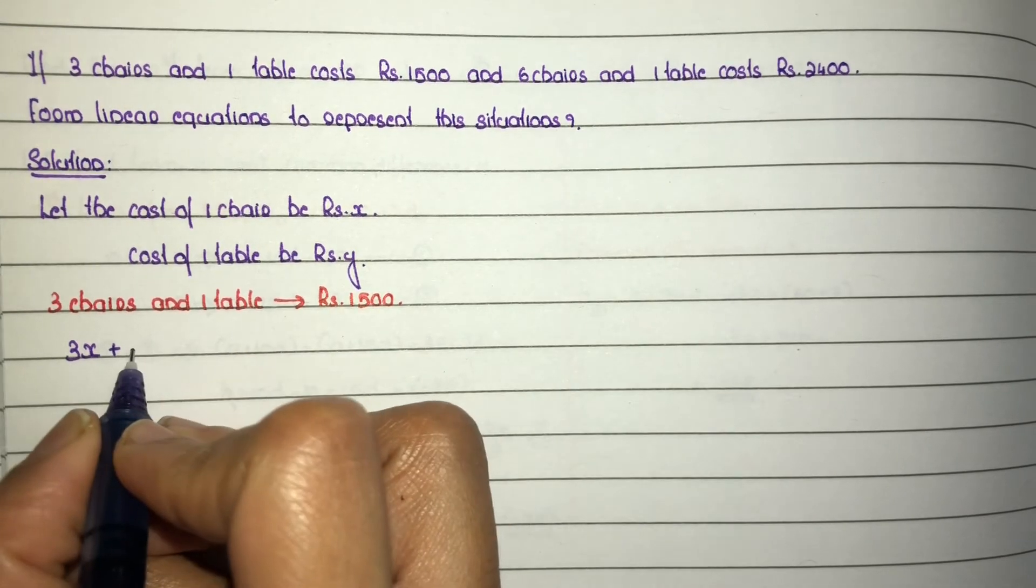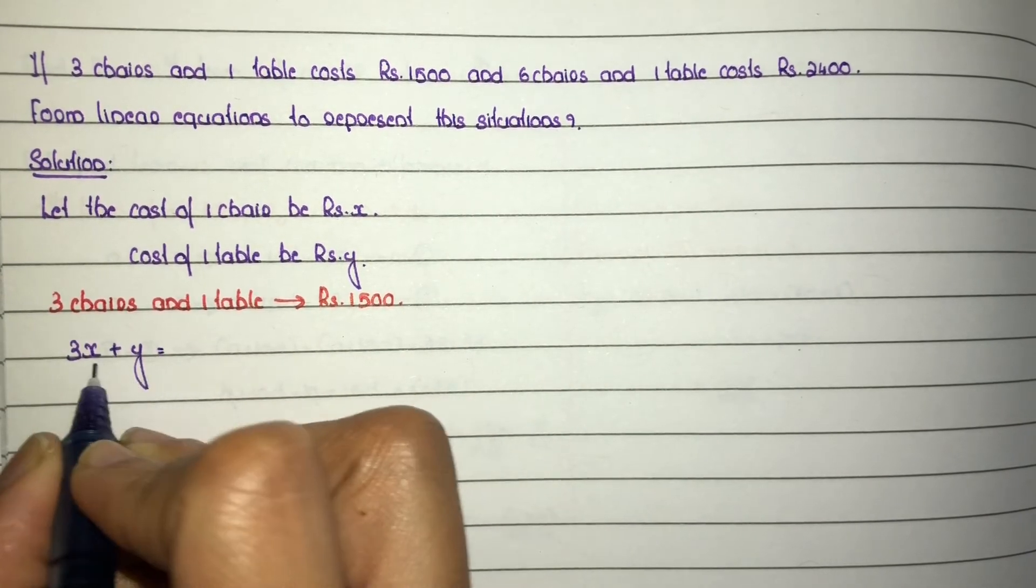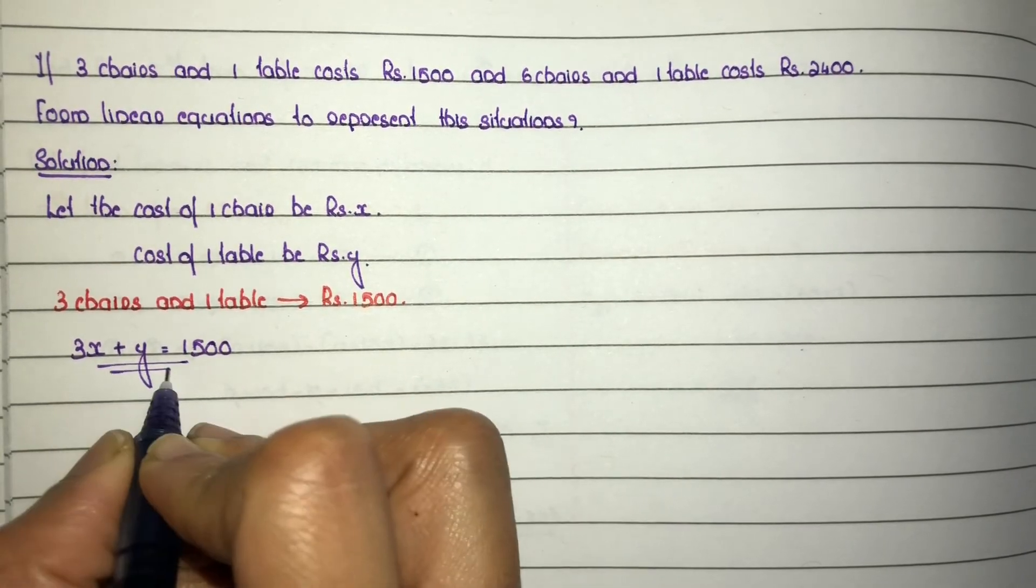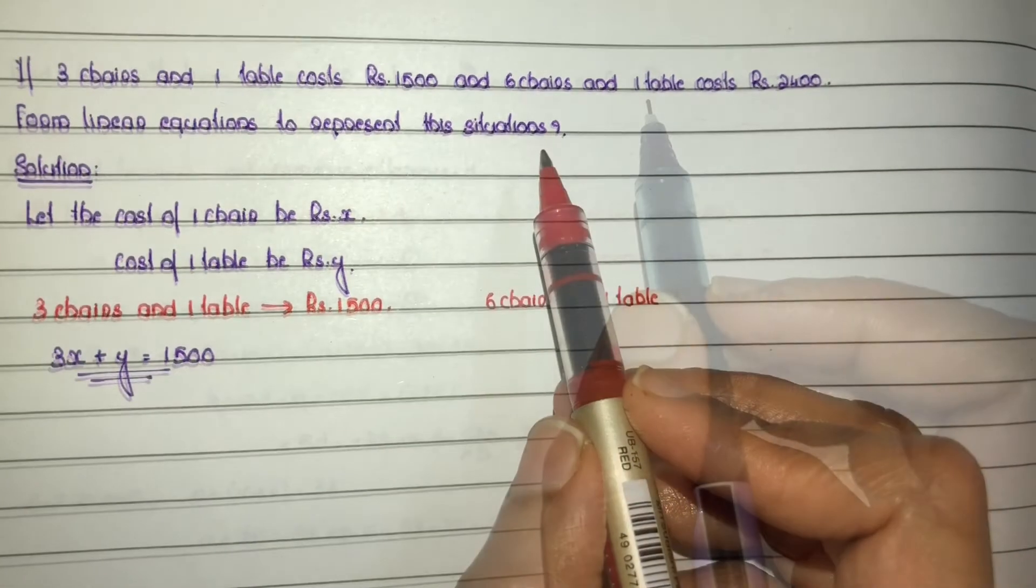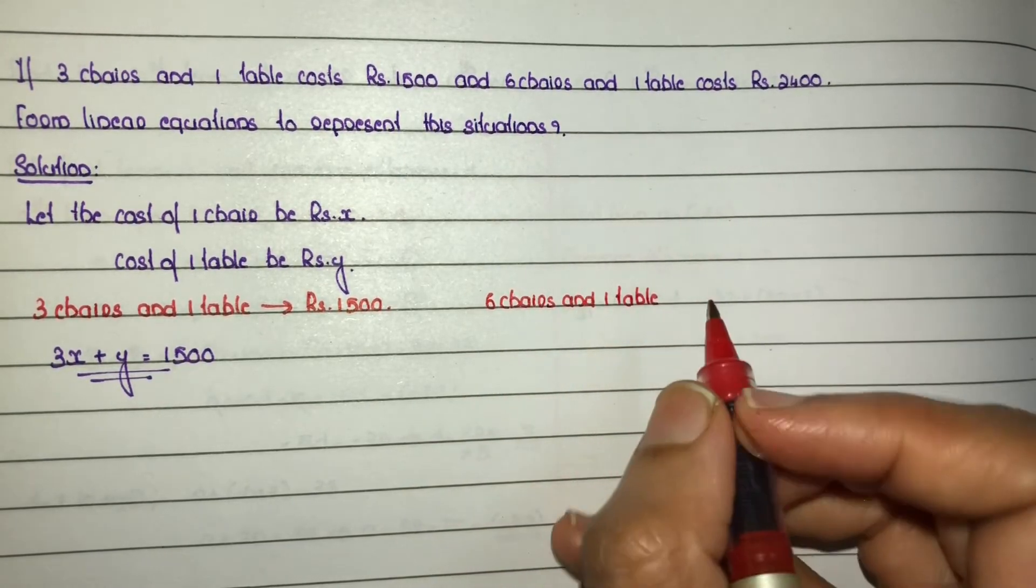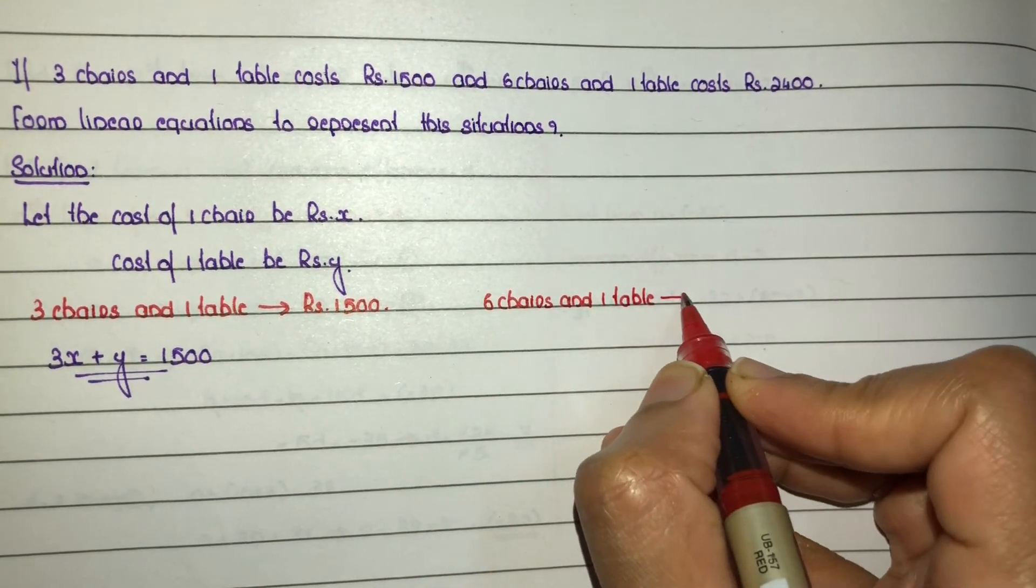One table costs y, so this equals rupees 1500. Okay, next second part: six chairs and one table cost rupees 2400.